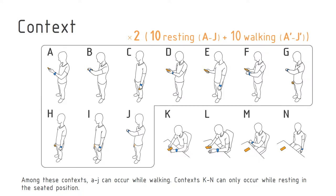Among these contexts, A through J can occur while walking. Contexts K through N can only occur while resting in the seated position.